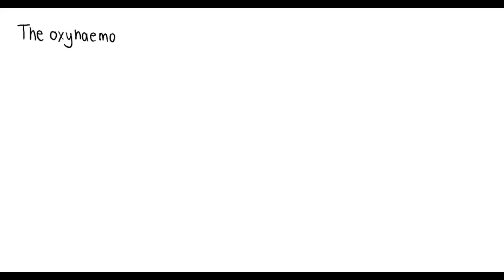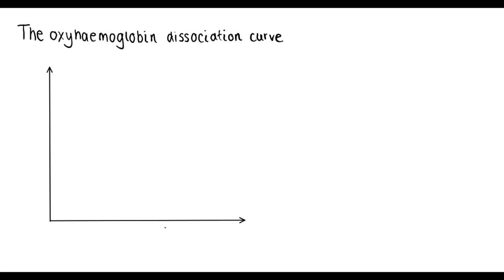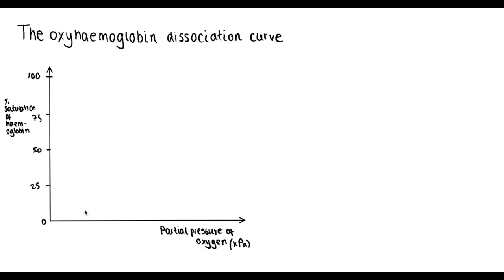You need to be able to understand this in relation to the oxyhaemoglobin dissociation curve. On the x-axis is the partial pressure of oxygen — basically just another way of saying concentration of oxygen. On the y-axis is the percentage saturation of haemoglobin with oxygen, so how much oxygen is bound to haemoglobin. We would expect a positive correlation, but as you can see, this isn't directly proportional — the curve looks like an S-shape, which I'll explain in a moment.